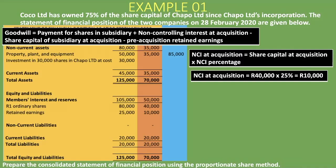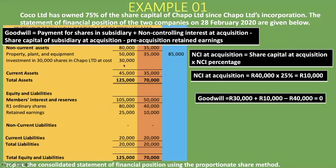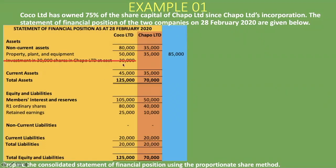Now that we have the 10,000 rand, we have everything needed to calculate goodwill: 30,000 rand (payment for shares) plus 10,000 rand (non-controlling interest at acquisition) minus 40,000 rand (share capital of subsidiary at acquisition) minus zero (no pre-acquisition retained earnings) equals zero. So there is no goodwill. We cancel out the investment in 30,000 shares in the subsidiary because it does not go into the consolidated statement of financial position, as explained in previous lessons.